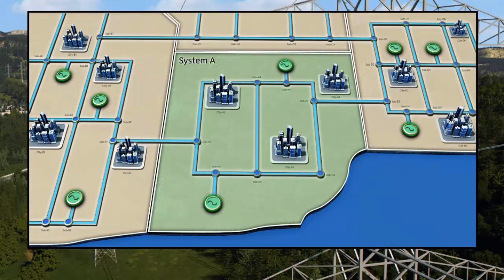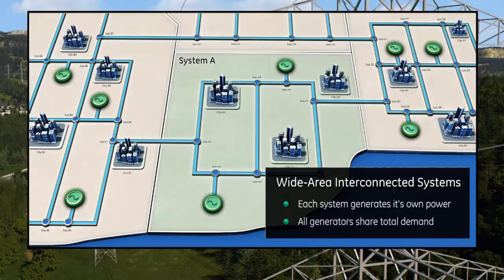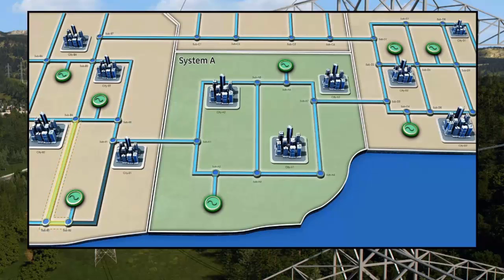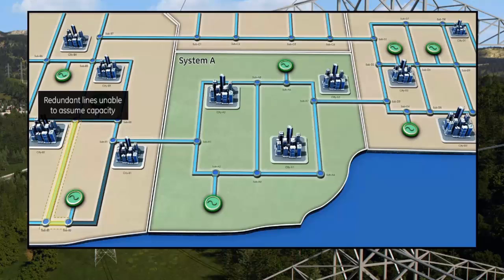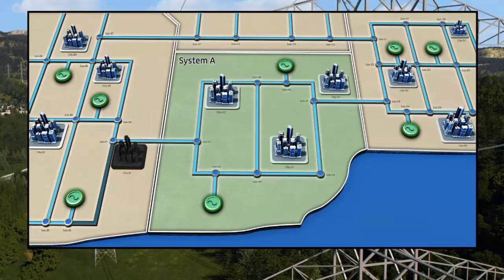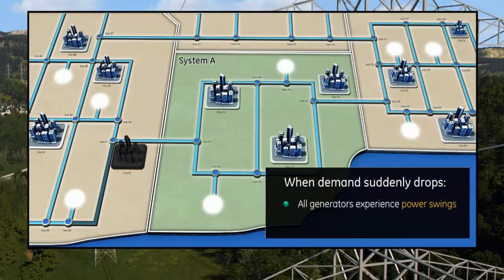As an example, System A represents a portion of a much larger group of interconnected systems. Each of these interconnected systems generates its own power, but all generators are sharing the total demand requirements. A transmission line outside of System A suddenly suffers a phase-to-ground fault. Local protection devices trip the affected circuit, however the redundant lines are unable to assume the lost transmission capacity, resulting in significant load shed from the system.